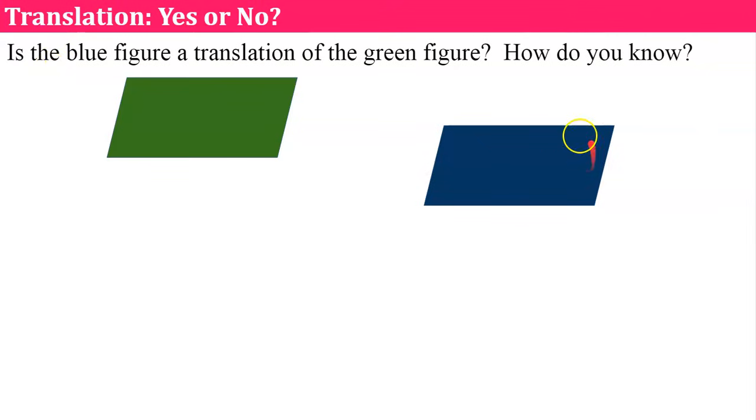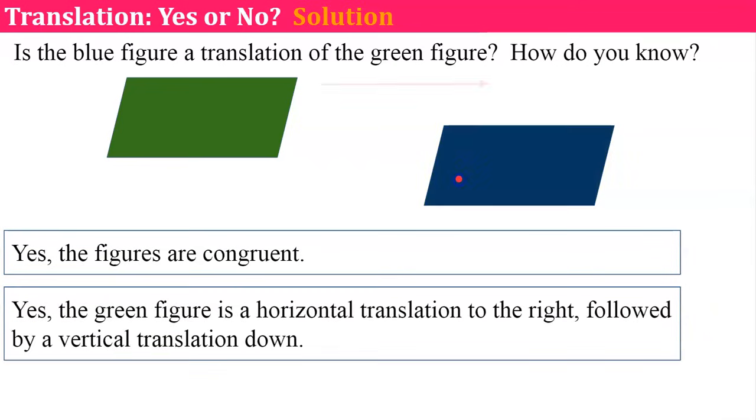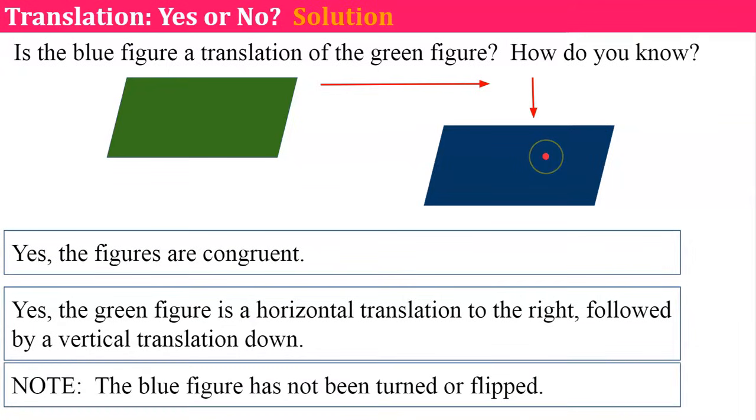Here's another one. Is the blue figure a translation of the green figure? And how do you know? The answer is yes. If I slide, first off, we know that if I put the green on top of the blue, they're congruent, and I can slide to the right and down, and it would result a blue figure by just sliding it. Noticing that this blue figure hasn't been turned, it hasn't been flipped, and it has not changed size.